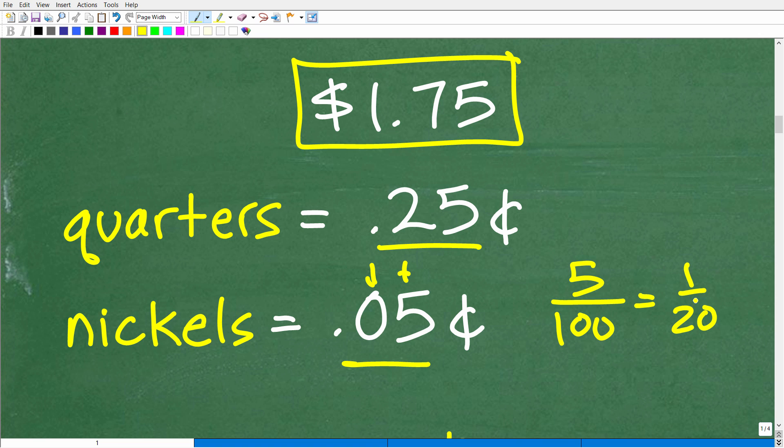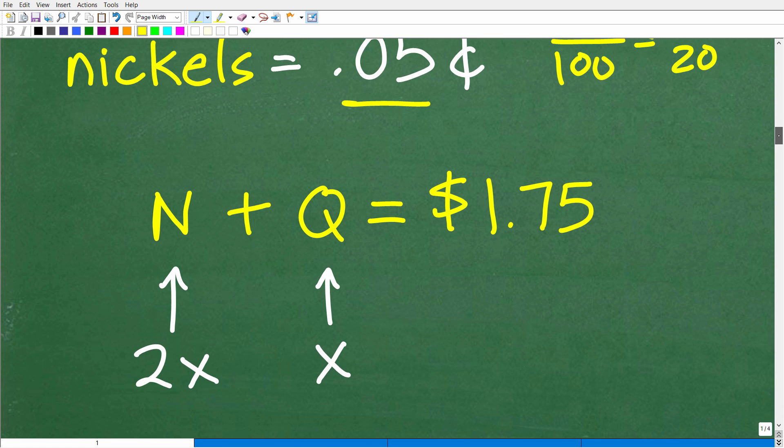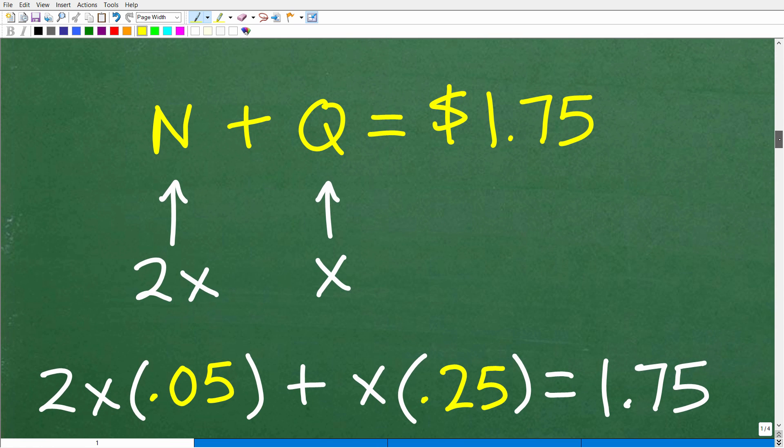Now, if I have two quarters, okay, how much is that worth? Well, that's going to be 0.25 times 2, all right, or 0.50, or 50 cents. But if I have four quarters, that would be what? 0.25 times 4. So what's that equal to? Well, that's going to be worth 1.0, or $1, okay? So again, these are the things that we need to be thinking about, but now let's go ahead and go back to our equation. So nickels plus quarters is equal to $1.75.